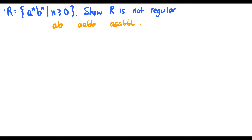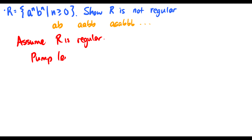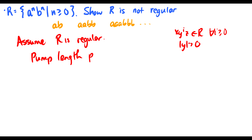So let's show it's not regular. We're going to assume that R is regular, so there's some pump length p. Remember the three conditions: x y^i z must be in R for all i ≥ 0; y must have length greater than zero; and the combined length of x and y must be less than or equal to p.